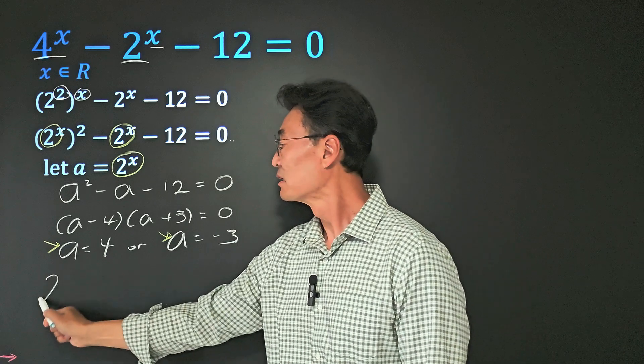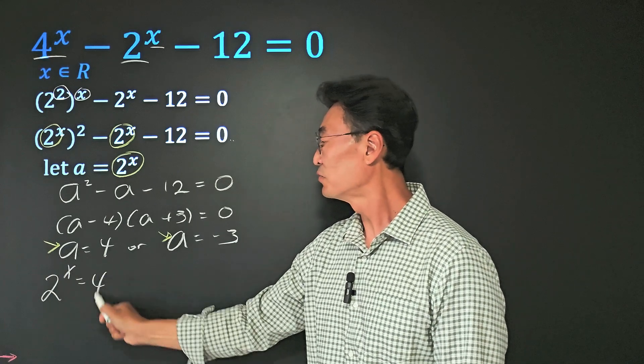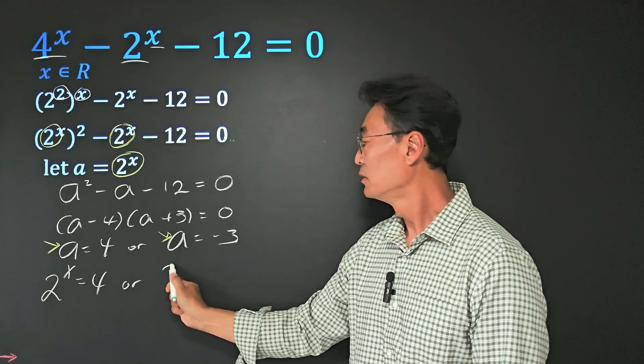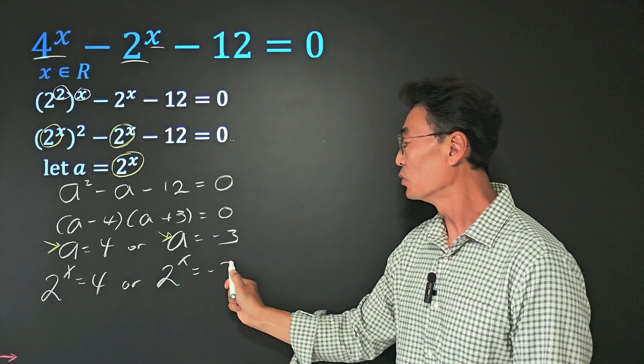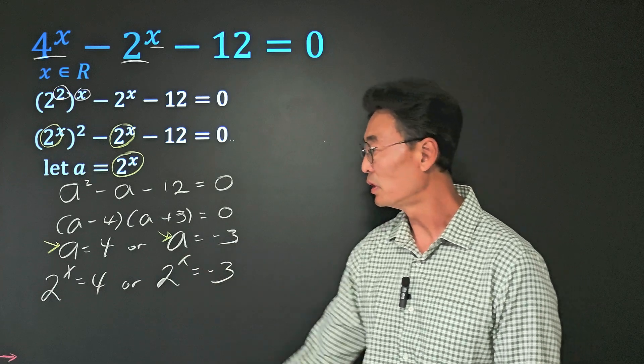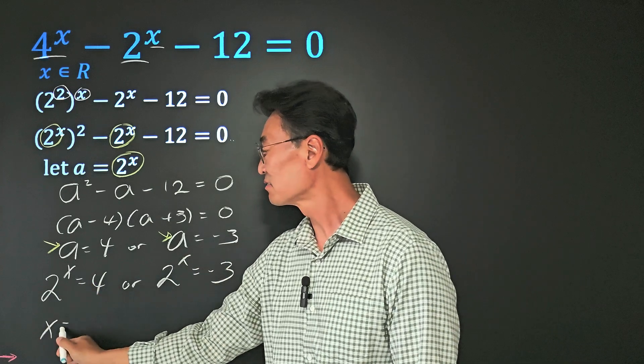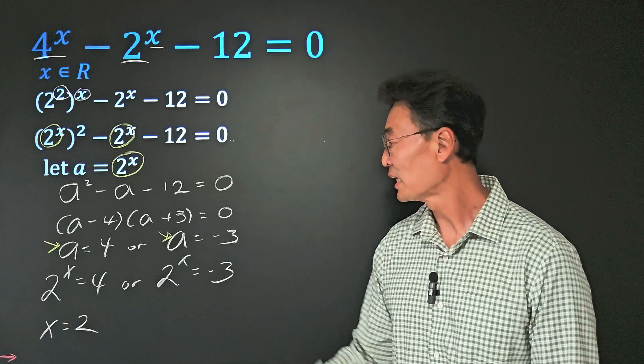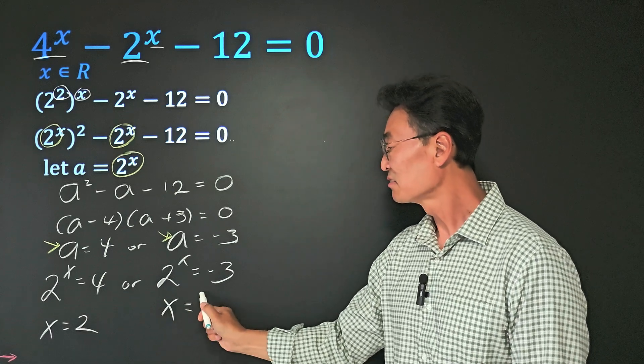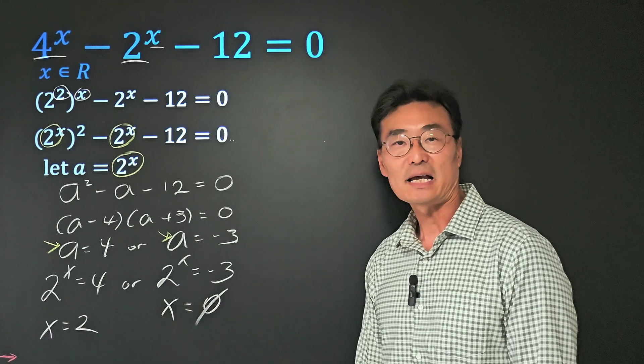We get 2^x = 4 or 2^x = -3. From here you can see that x = 2, and from here x has no solution.